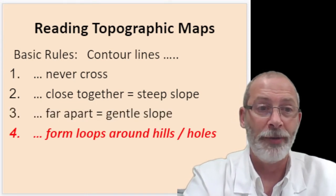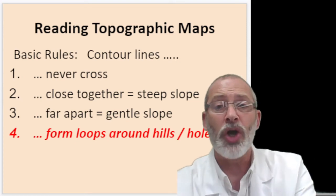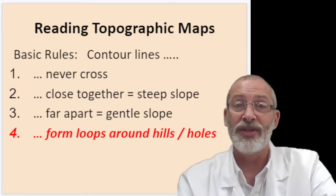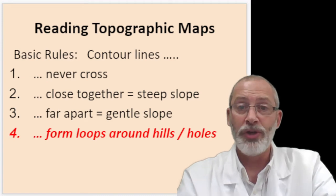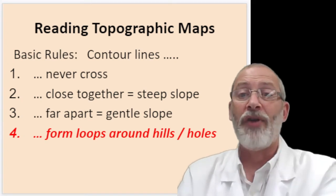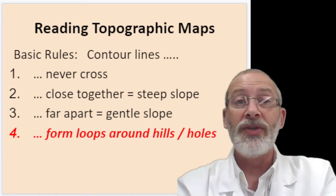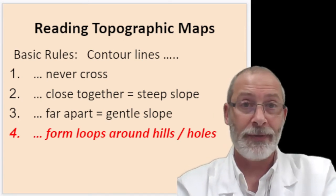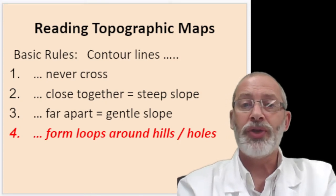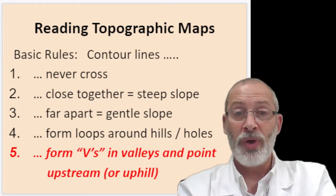Rule number four: contour lines form loops around hills and holes. As you work with topographic maps you'll see this clearly — contour lines go around hills when viewed from above, and the same is true of holes such as quarries, gravel pits, mines, or areas around lakes and ponds. In either case, whether hills or holes, contour lines form loops.